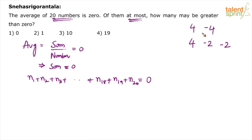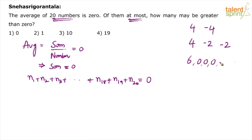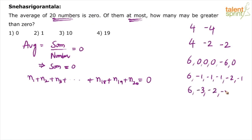Let's talk about six numbers where the average is 0. The numbers can be 6, 0, 0, 0, 0, minus 6 — sum is 0, so average is 0. Or the numbers can be 6, minus 1, minus 1, minus 1, minus 1, minus 2 — total positive sum is plus 6 and negative sum is minus 6. Or numbers like 6, minus 3, minus 2, minus 1, 0, 0. The point is: for the average to be 0, the sum must be 0.